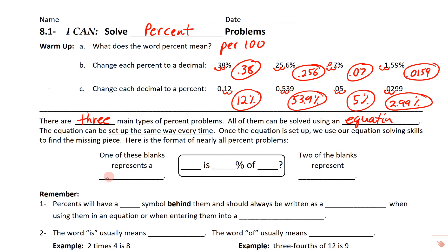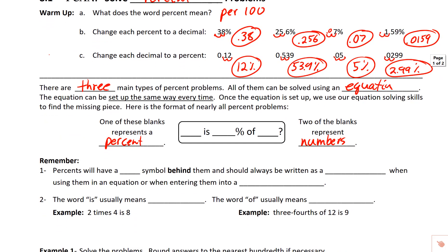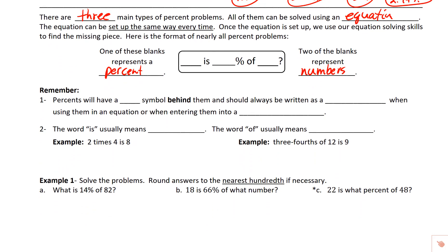One of these blanks — the middle one — represents a percent. There's only one percent in these problems, and the other two blanks represent numbers. Percents will always have a percent symbol behind them, and should always be written as a decimal when using them in an equation or entering them into a calculator. The word 'is' usually means equal, and the word 'of' usually means multiply.